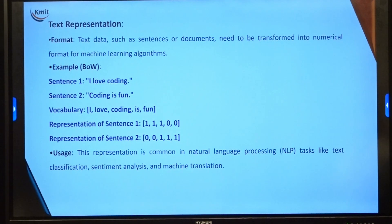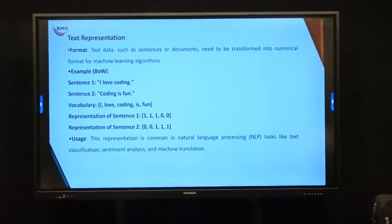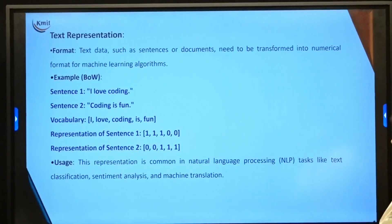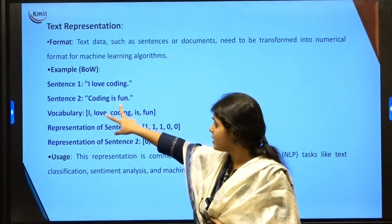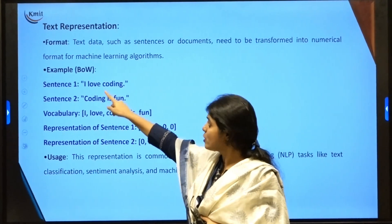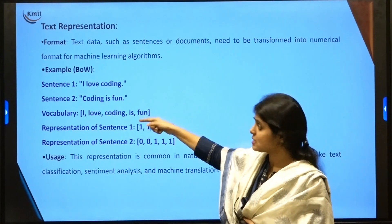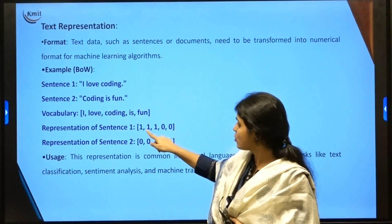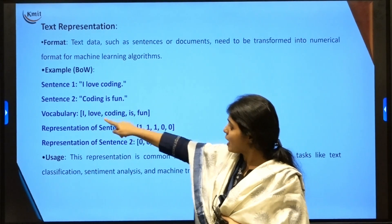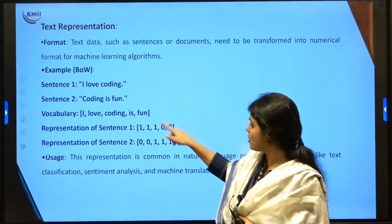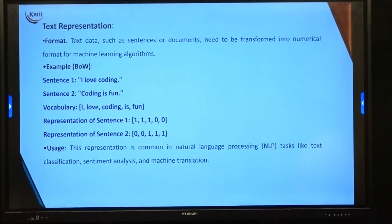The second type is textual representation. Text data refers to a document, a sentence, or a paragraph. For example, take the sentence 'I love coding' and another 'coding is fun.' To represent this for a machine, I build a vocabulary of all unique words: I, love, coding, is, fun. Sentence one is represented as ones for 'I love coding' and zeros for 'is fun.' Sentence two has zeros for 'I love' and ones for 'coding is fun.' This is one method of representing text data.